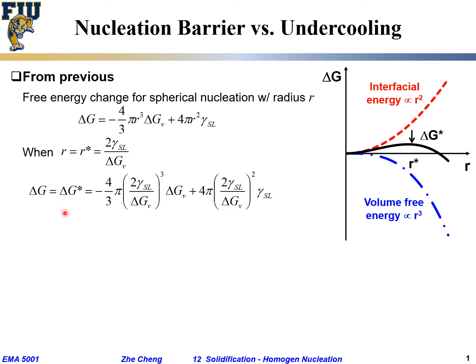When this happens, the ΔG term would be ΔG*. We plug in and replace r with r*, which is 2γ divided by ΔGv. We put that r* to the power of 3 here, and the same thing r² here. When our actual radius equals that critical value, the ΔG term becomes this.